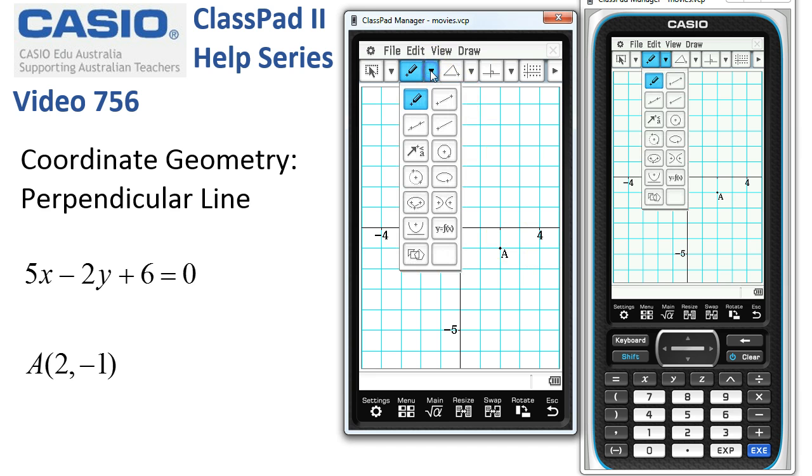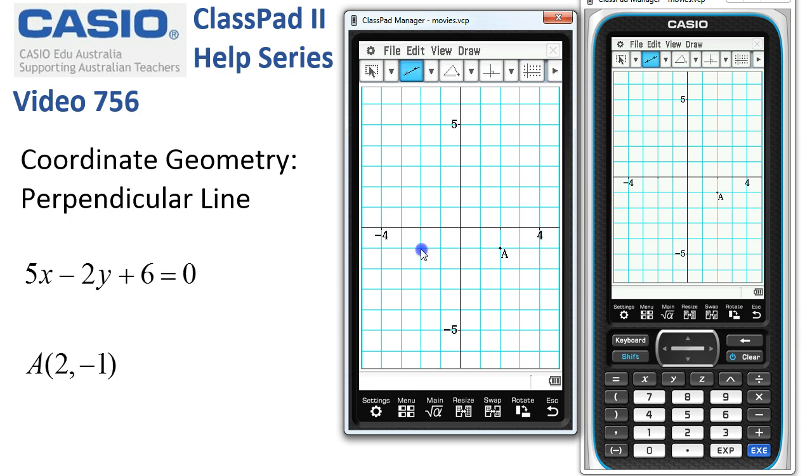Now next we'll use the infinite line segment here and I'm just going to tap roughly here and here to get a line on our graph paper but now we want to modify its equation to the one that's given. So we head off to the measurement toolbar and select this line and you can see that's not the equation we want.